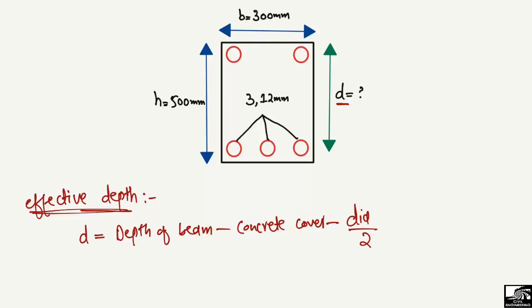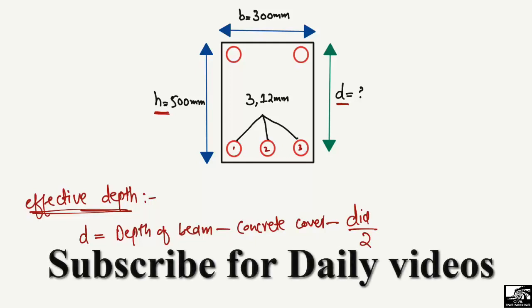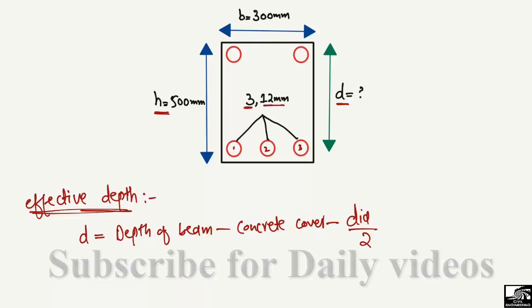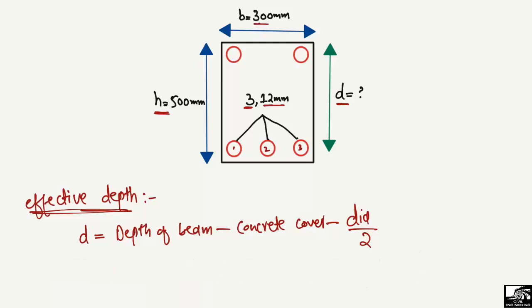Now I will show how we can find the effective depth of a beam. For this beam, the total depth is 500 millimeters. There are three flexural tension bars used in the beam to take the tensile stresses — three bars of 12 millimeter diameter. The width of the beam is 300 millimeters.